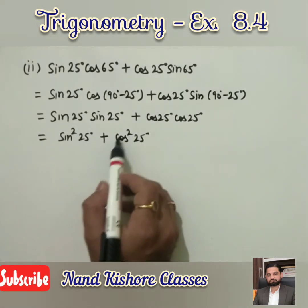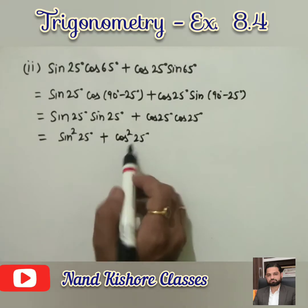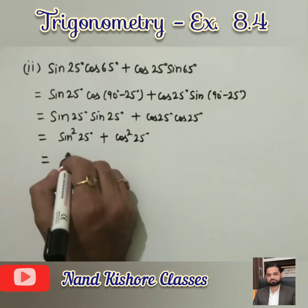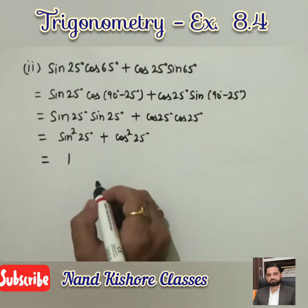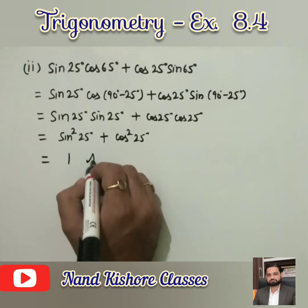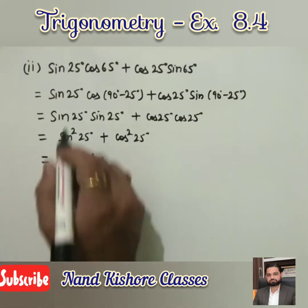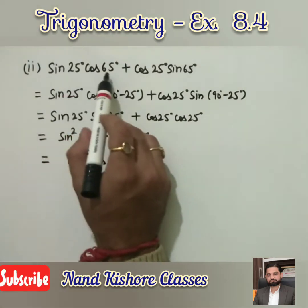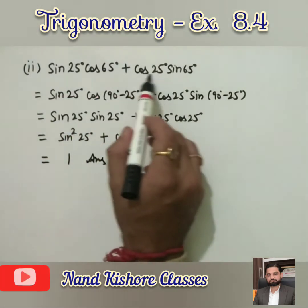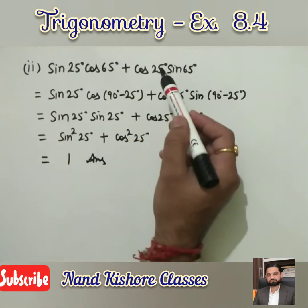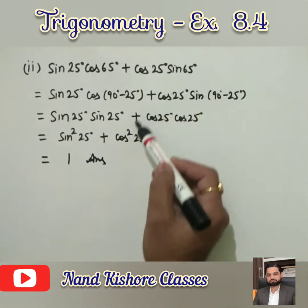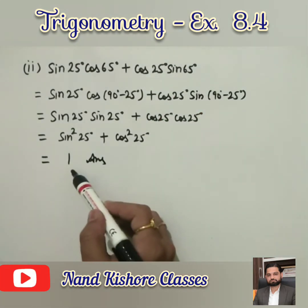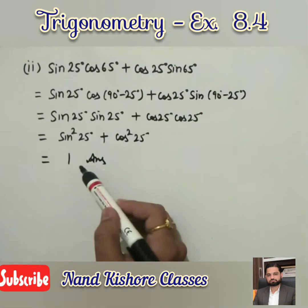This becomes sin²25° + cos²25°, which equals 1 — we have just done this formula. So sin25°·cos65° + cos25°·sin65°, following these very easy steps, gives us a final answer of 1.